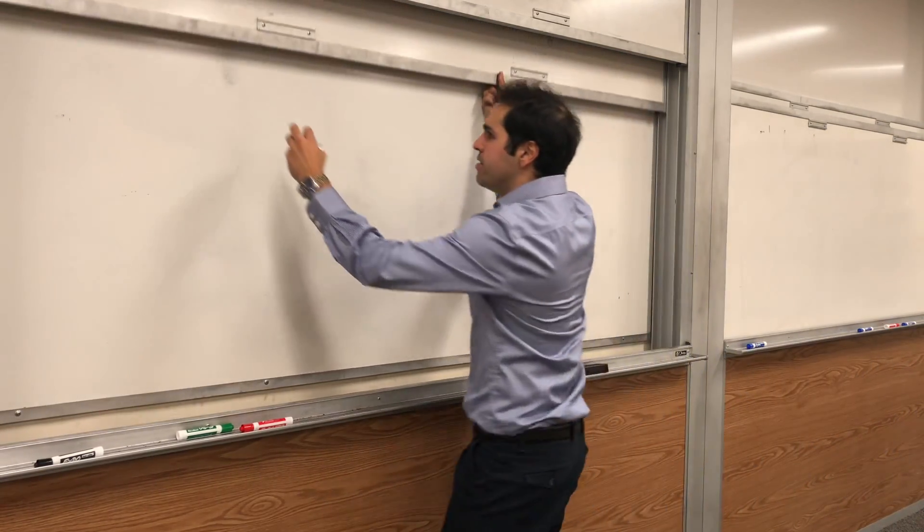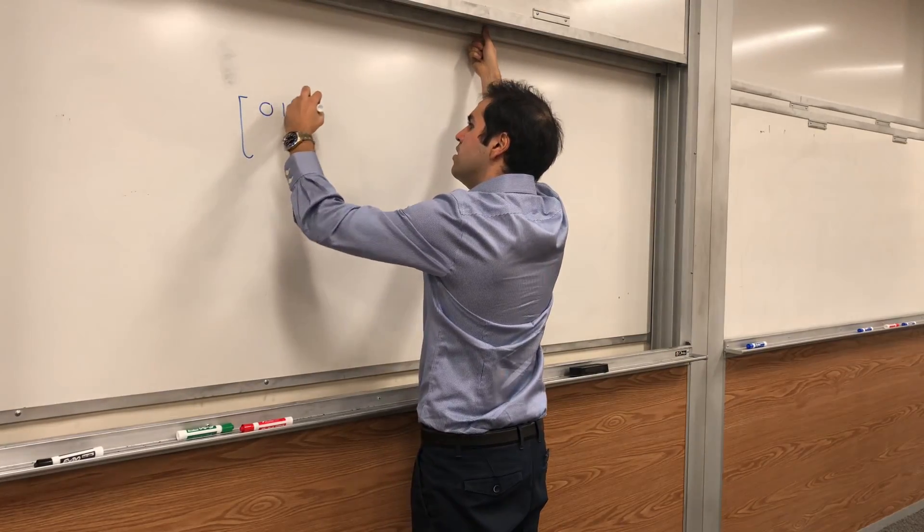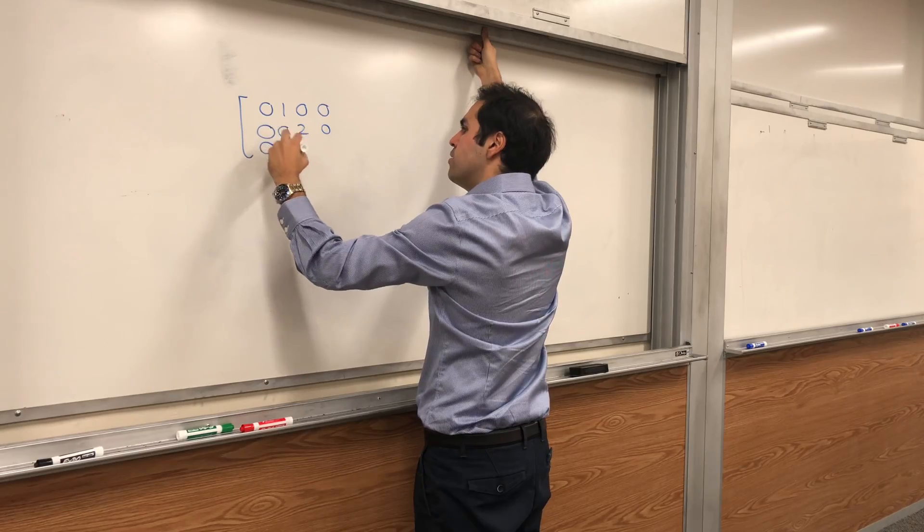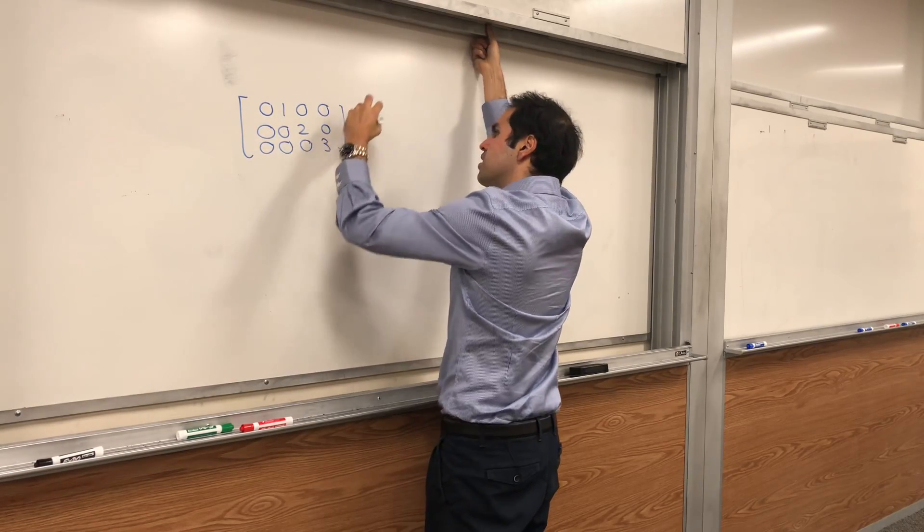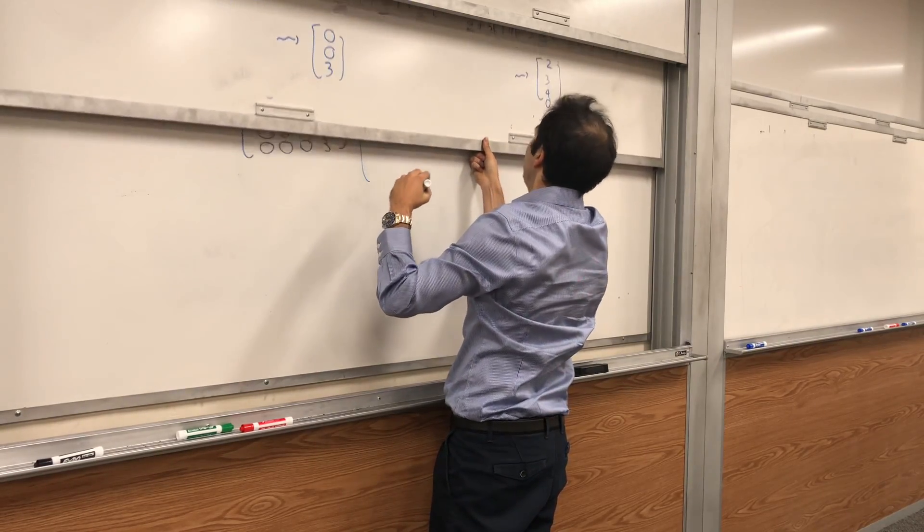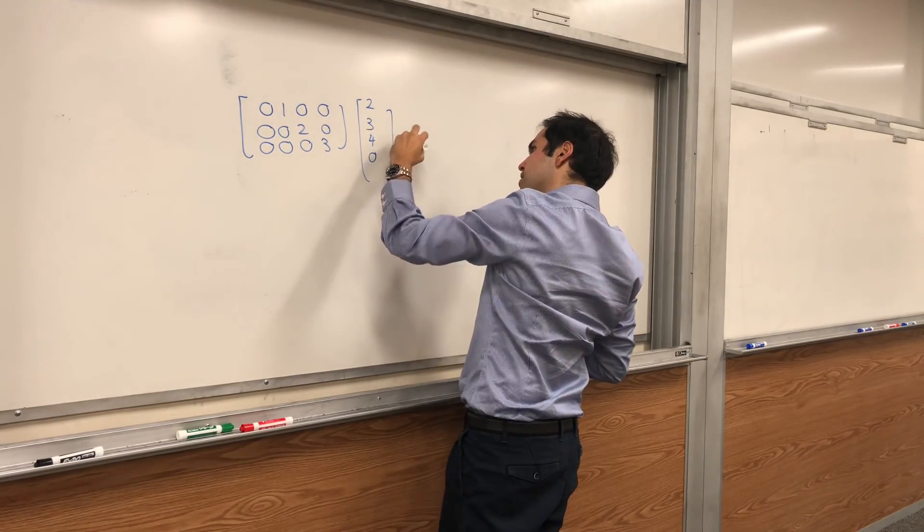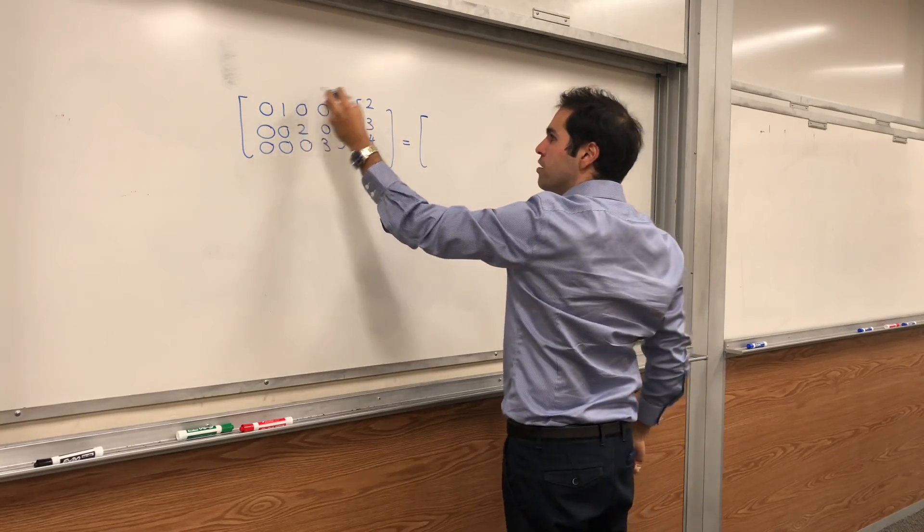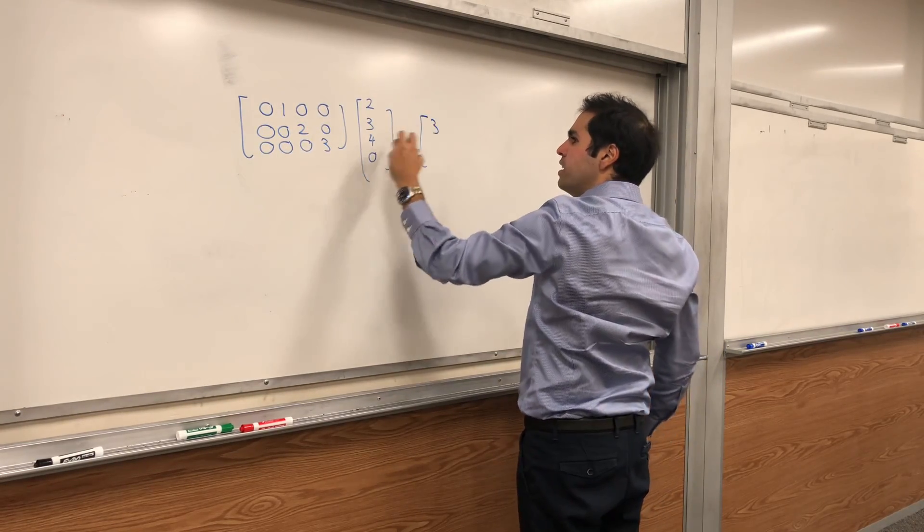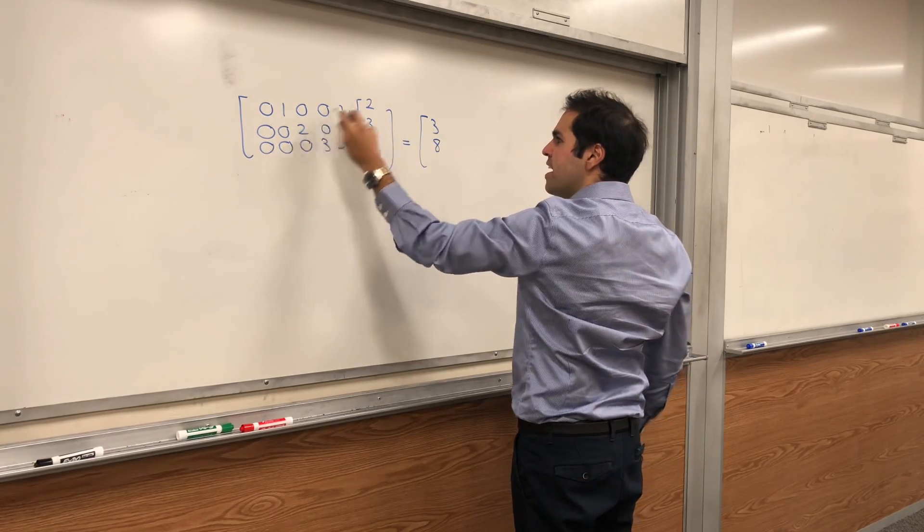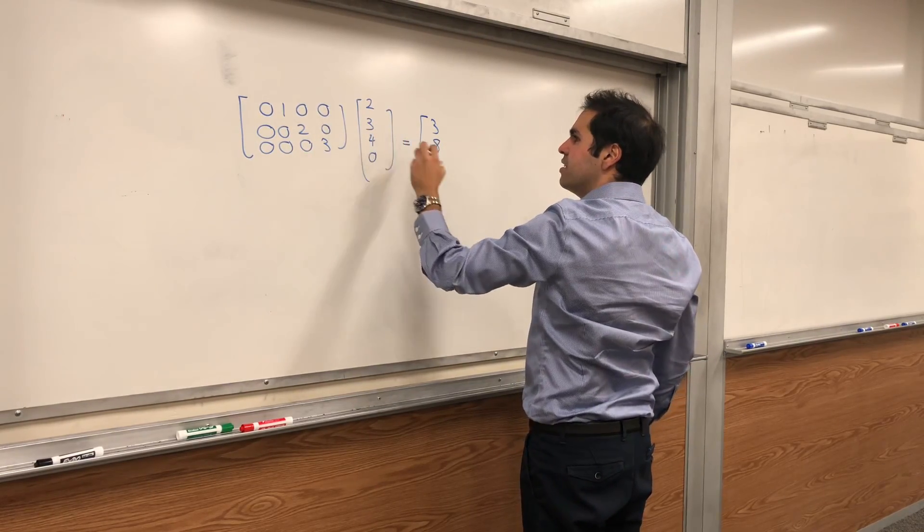Then, let's apply the matrix to this vector. So let's apply the matrix 0, 1, 0, 0; 0, 0, 2, 0; 0, 0, 0, 3 to the vector 2, 3, 4, 0. And if we multiply this, we get 3, and then 2 times 4, which is 8, and then 0.